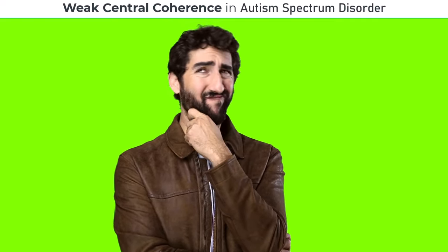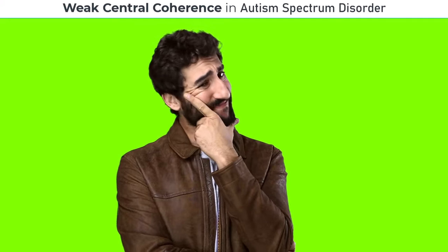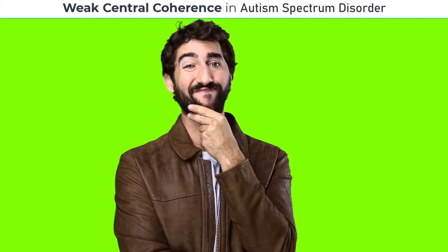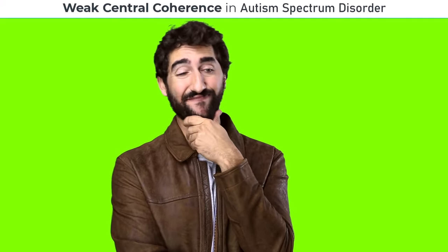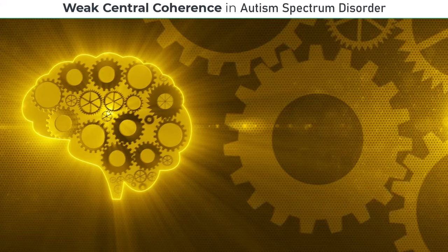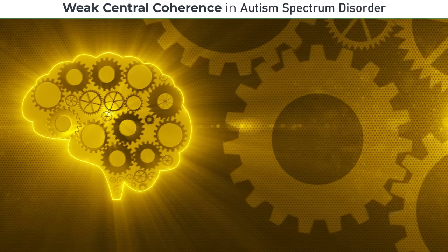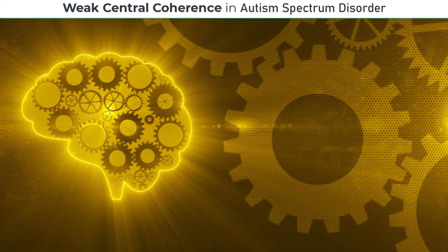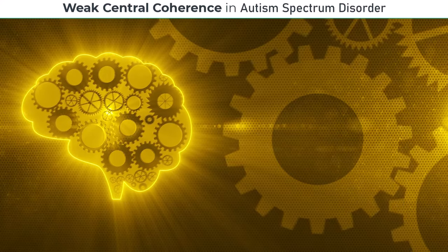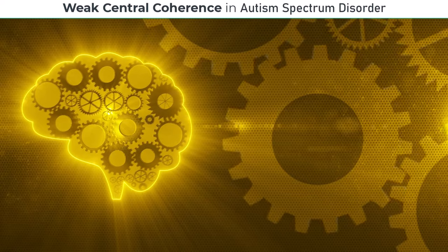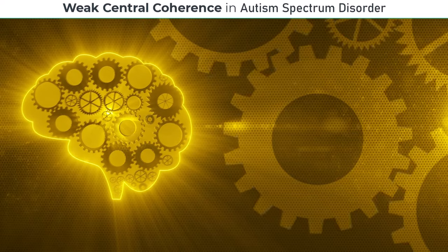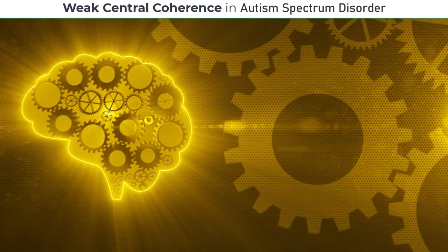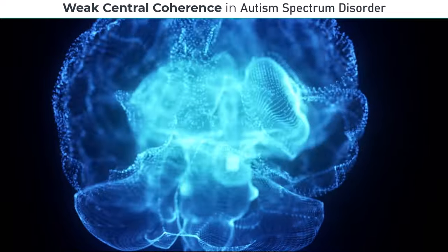It's important to note that weak central coherence can occur independently or coexist with other neurodevelopmental conditions like autism spectrum disorder and attention deficit hyperactivity disorder, ADHD. Now, let's explore the signs and symptoms of weak central coherence.